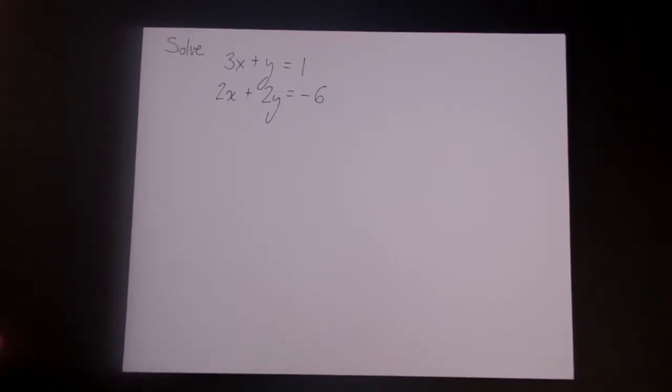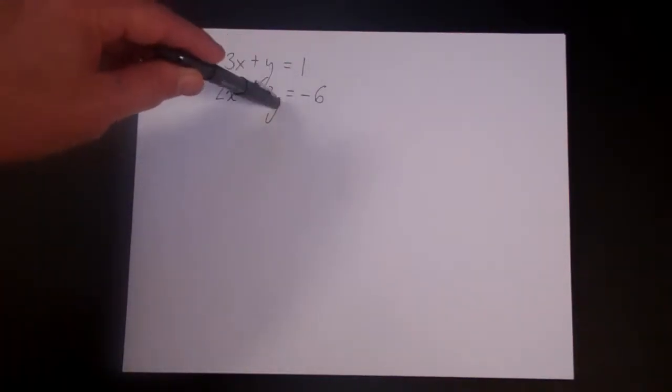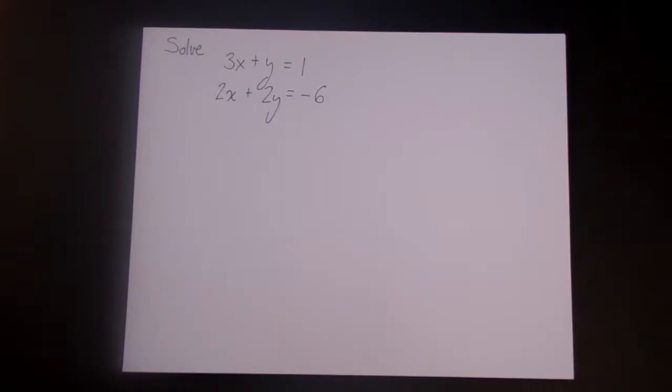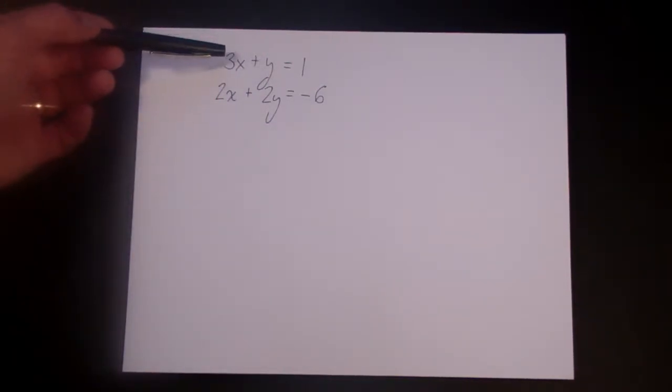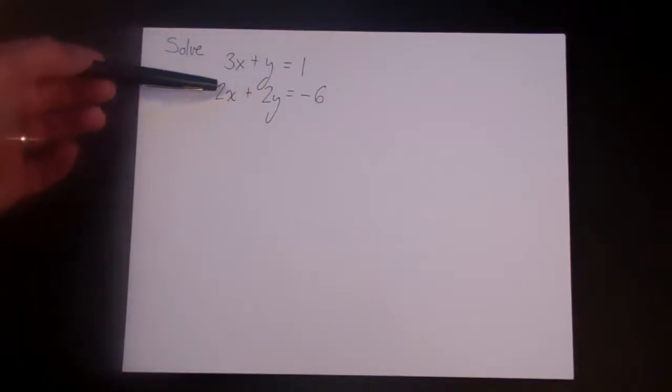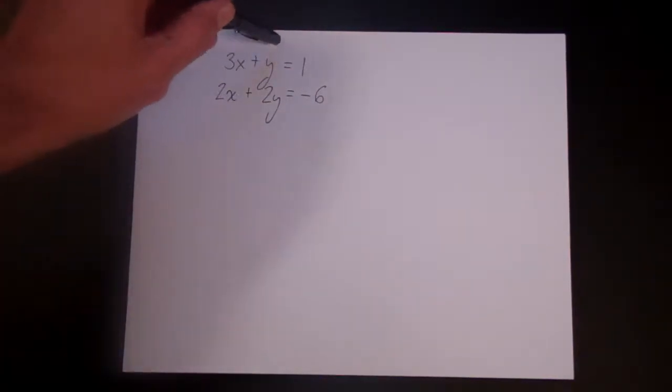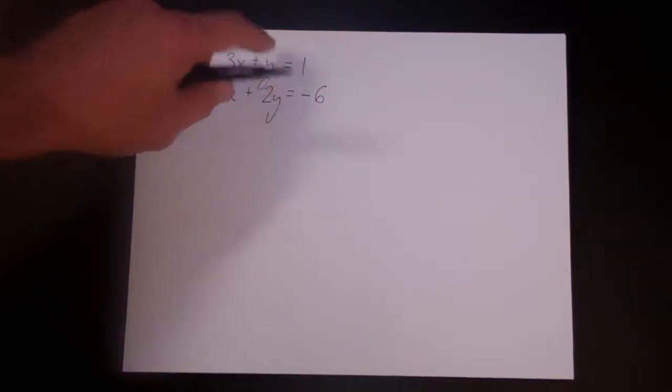Well, the first step to the substitution method is to choose a variable with a coefficient of 1 or minus 1, if there is one. You notice here the coefficient is 3, there it's 1, there it's 2, and there it's 2. So let's solve for this variable right here.